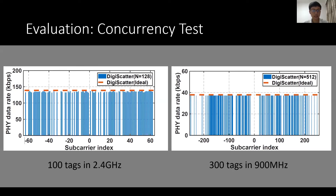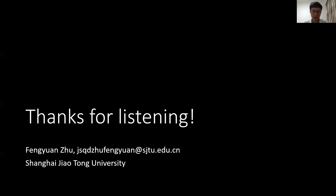We take a look at the link-level examination of all tags in two testbeds. One testbed contains 100 tags in 2.4 GHz, and another contains 300 tags in 900 MHz. The horizontal axis indicates the subcarrier index of each tag, and the vertical axis represents five data rates. That is all for my talk. Thanks for listening.